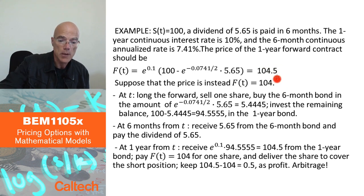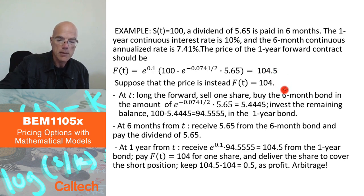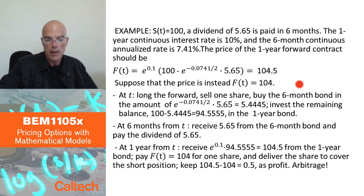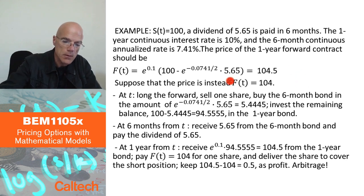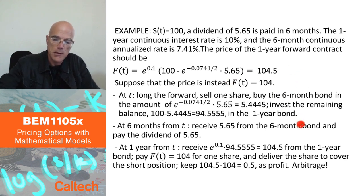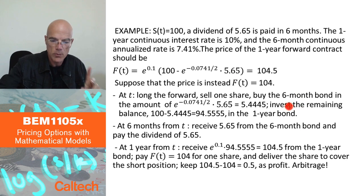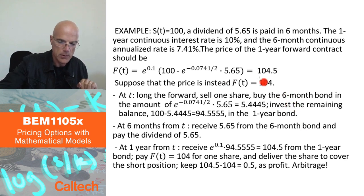So it means I should go long — I should buy the forward contract, go long in the forward contract, and sell the underlying. It's pretty much the same proof as before, except I have to worry about the dividends.